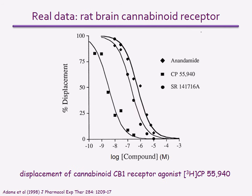This plot shows real data obtained from a competition assay carried out on the cannabinoid CB1 receptor, where non-specific binding was subtracted before plotting. The assay used a tritiated form of the cannabinoid receptor agonist CP55940, and measured the abilities of the cold agonist as well as two other cannabinoid drugs to displace the labelled, or hot, agonist. The cold agonist was the most potent at displacing hot agonist from the receptor, and anandamide the weakest.